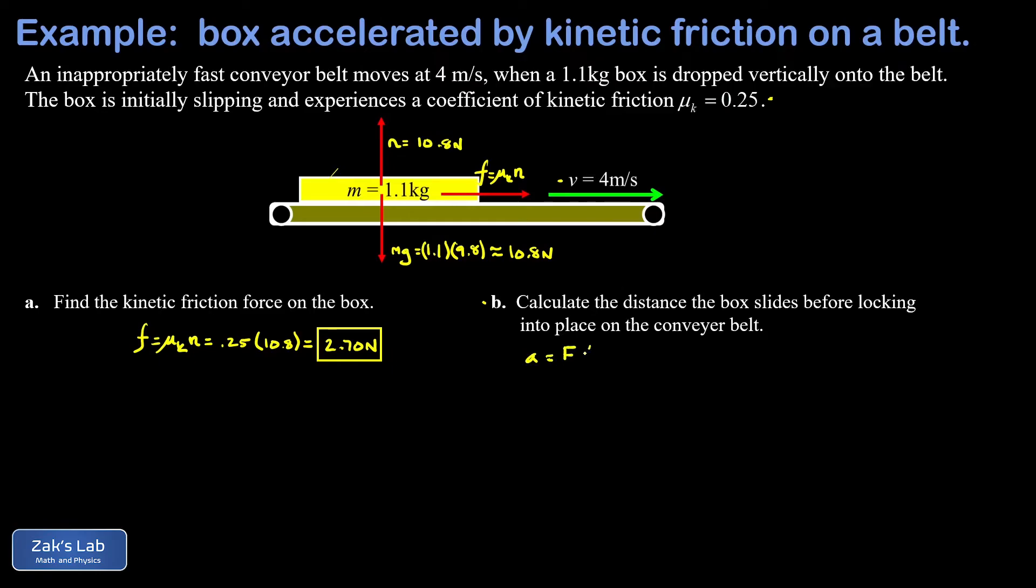Applying Newton's second law, we write a = F/m. With a horizontal force of 2.70 newtons and mass of 1.1 kilograms, we arrive at an acceleration of 2.45 meters per second squared.